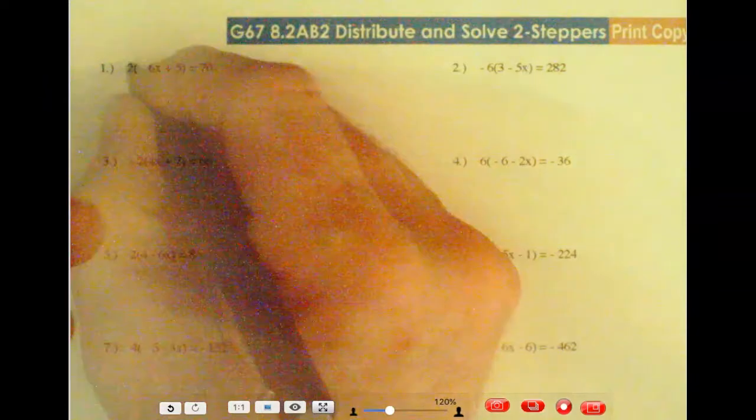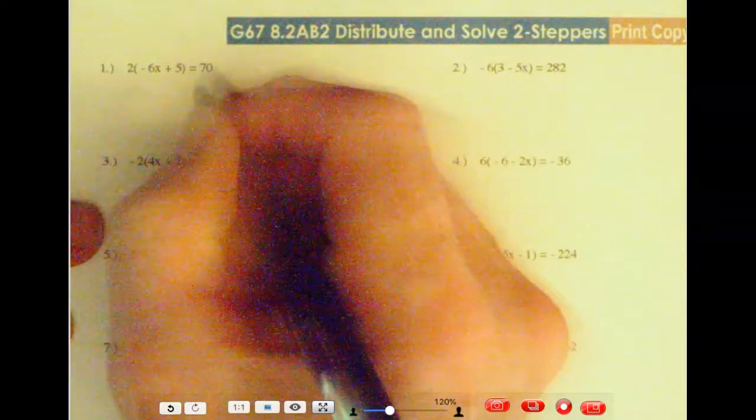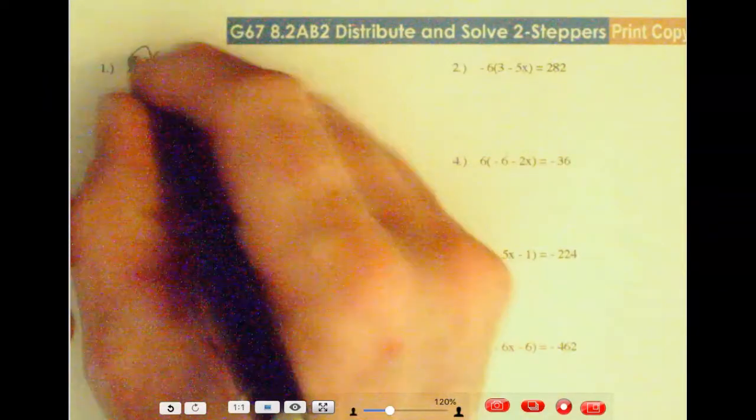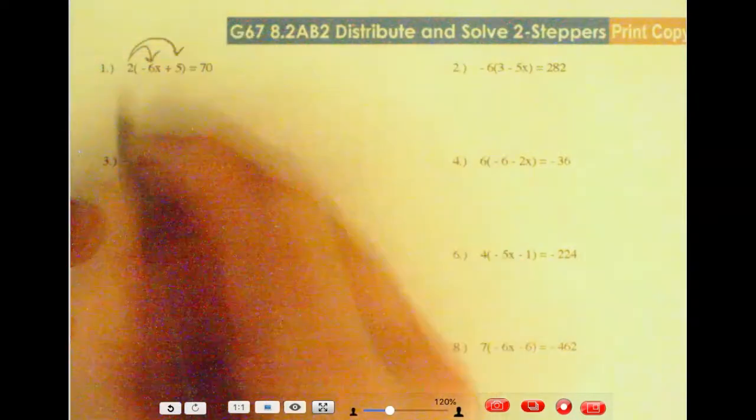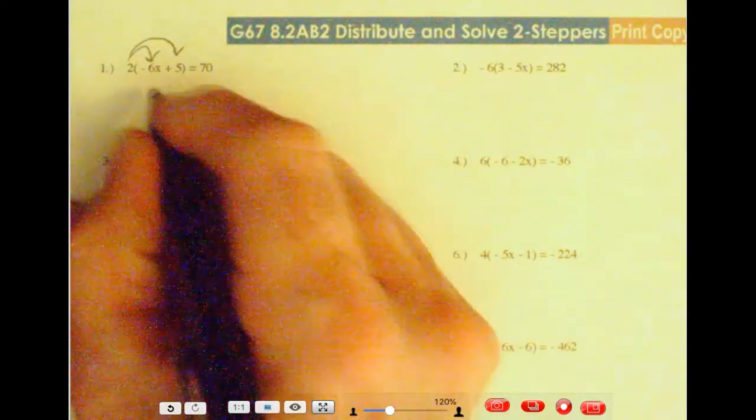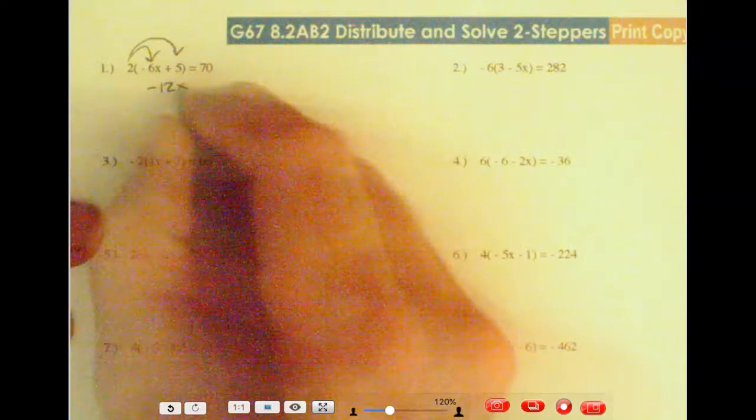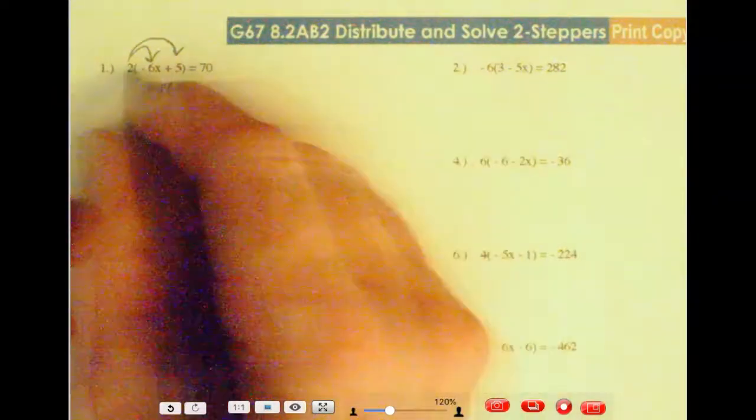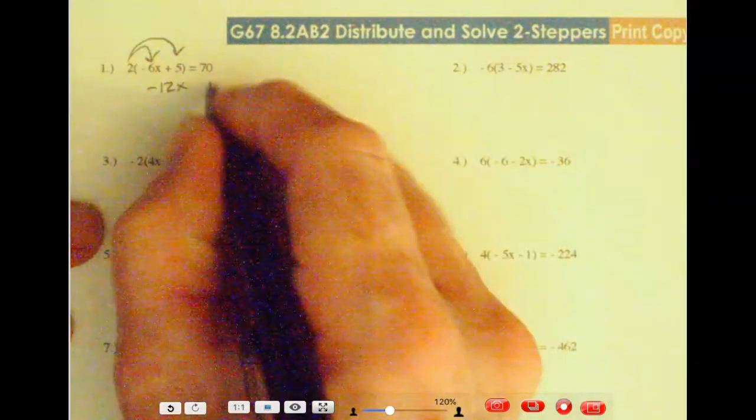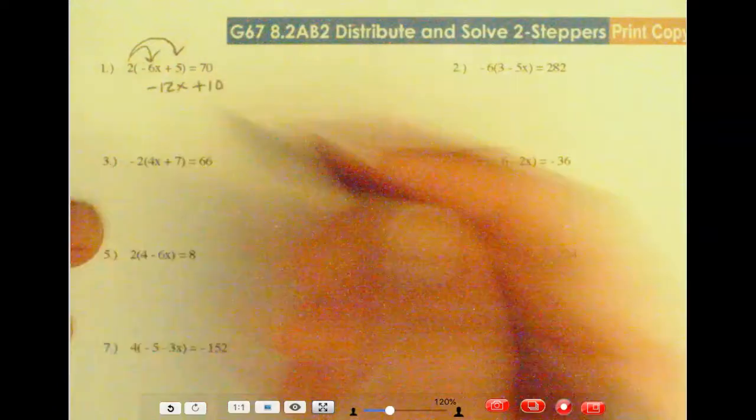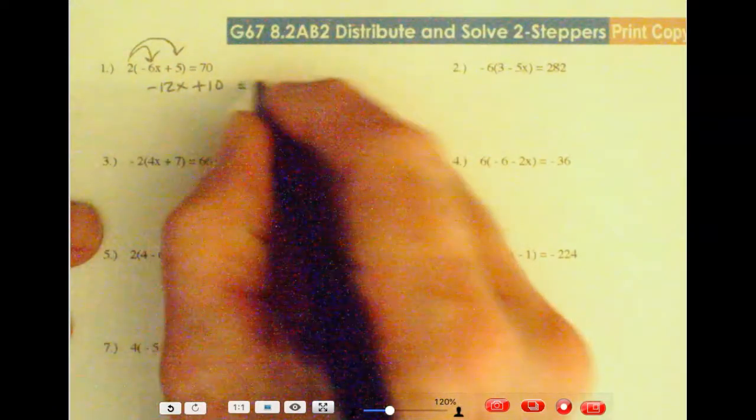Okay, so let's start off by, the first thing we have to do is we have to distribute. So 2 times negative 6 would be negative 12, and there's an x attached. And then we've got 2 times 5, which is 10. That's a positive 10, because it's a positive times a positive, and that equals 70.